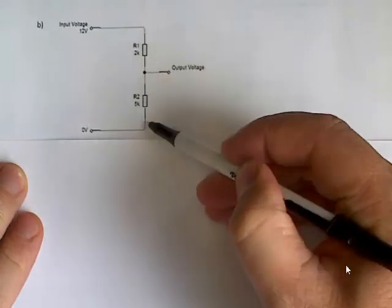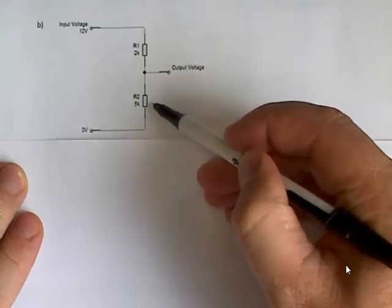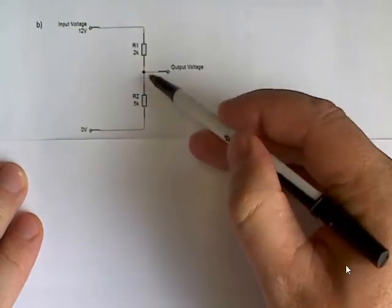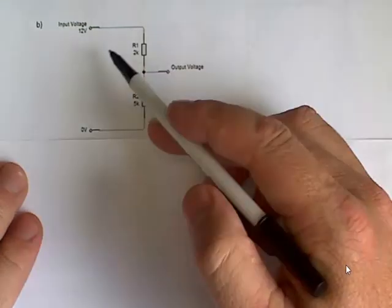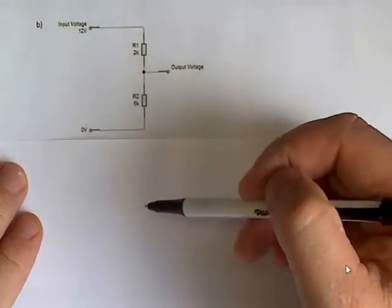which is the output voltage is across, is greater than half of the total resistance, so it's bigger than the other one, therefore the output voltage is going to be more than half of the input voltage, but still less than the input voltage.